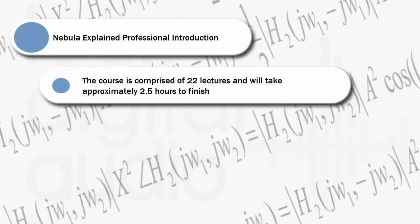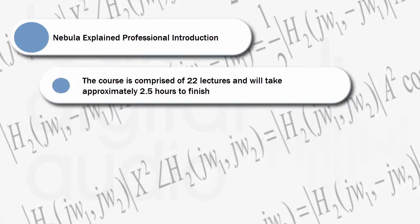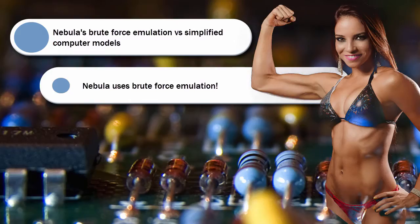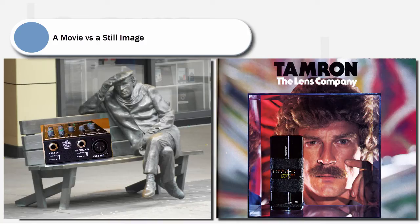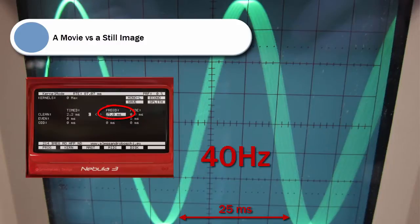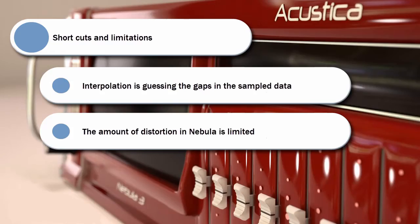The course is comprised of 22 lectures and will take approximately two and a half hours to finish. By the time you've completed it, you will learn how Nebula's brute force emulation works and what it can and can't achieve, the different ways that Nebula can sample hardware and why we would use each of them, how convolution impulse responses are used in reverb emulation, how sampling with Nebula differs from standard convolution, and what the dynamic dimension is and how Nebula can sample it.